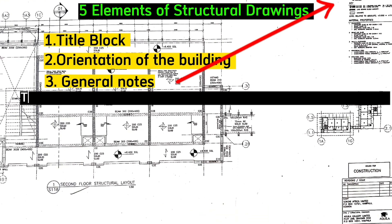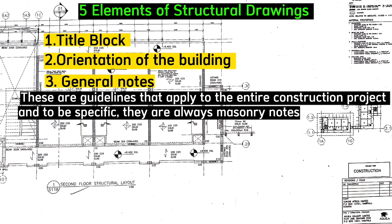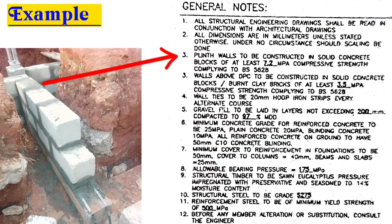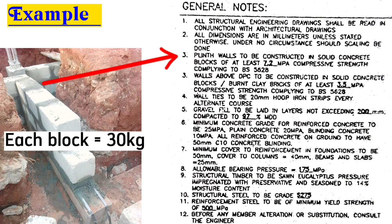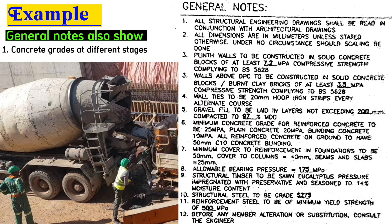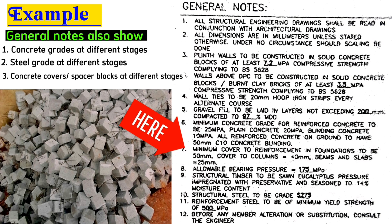The third element is general notes. These are guidelines that apply to the entire construction project and are always marginal notes. For example, you can see here that pleat walls are to be constructed in solid concrete blocks with 7.2 MPa compressive strength complying with bridge standard 5628. When you don't have a compression testing machine, what we used to do was measure these blocks directly to ensure each block was 30 kg on the weighing scale. General notes also show the concrete grade, steel grade, and concrete covers or spacer blocks at different stages — for example, 50 mm spacer blocks in the foundation, 40 mm for columns, and 25 mm for beams and slabs.